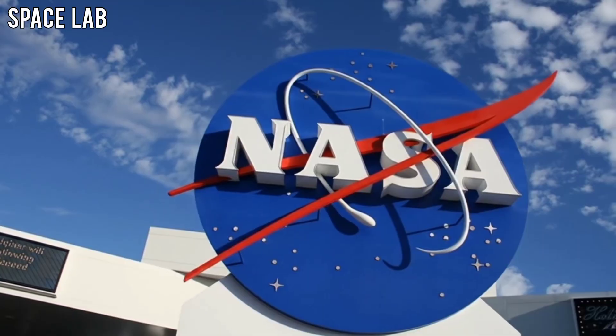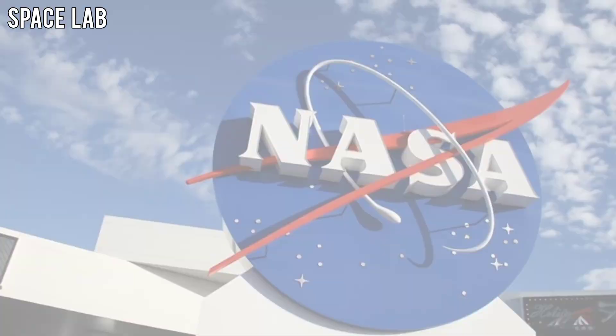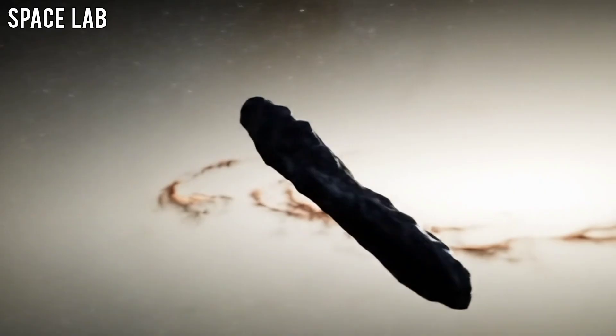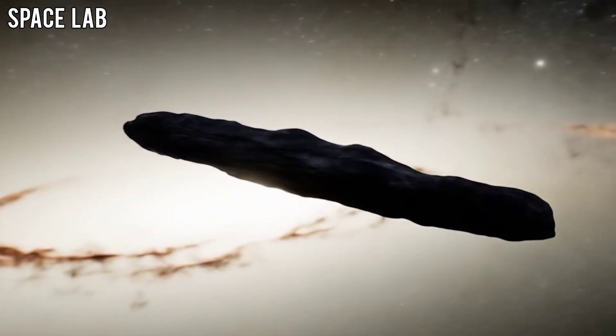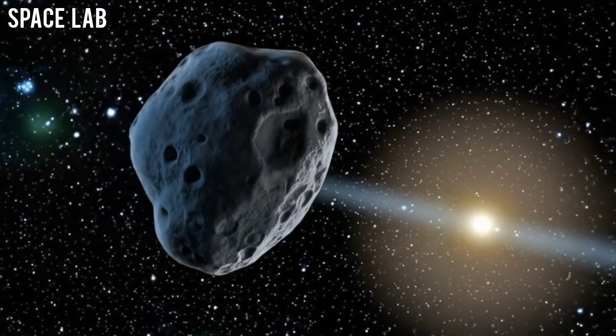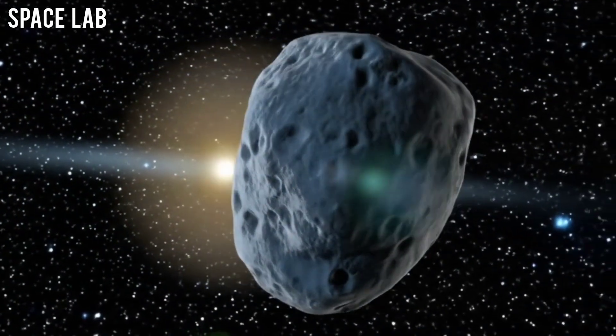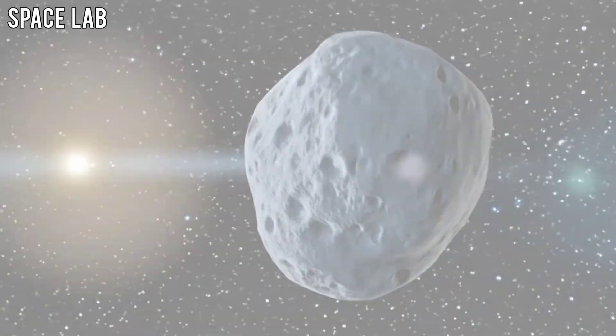At first, NASA hoped it was a sensor error, maybe a gravitational anomaly. But additional readings from the ESA's Gaia Observatory confirmed the course shift. Something or someone was controlling Atlas. The question was, why?